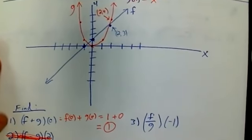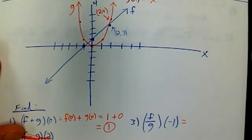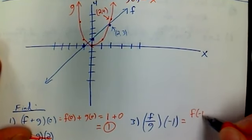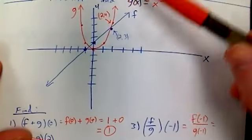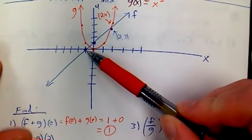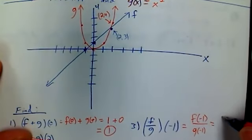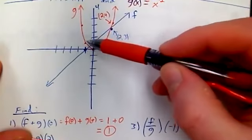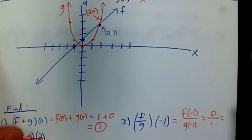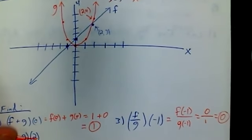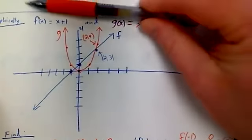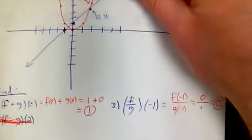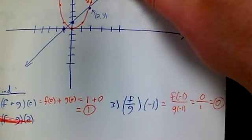What about f over g of negative 1? Well, at negative 1, let's see, f of negative 1 over g of negative 1. So what is f of negative 1? If I look at f, f of negative 1, it looks like it's 0. g of negative 1 looks like it's 1, so I guess that whole composition is 0. So you might have some problems where you have to look at the graphs, and you might not even know f(x) and g(x), but that's fine as long as you know what's going on.